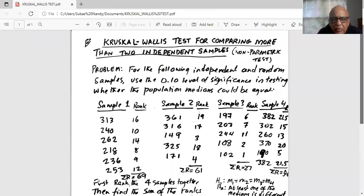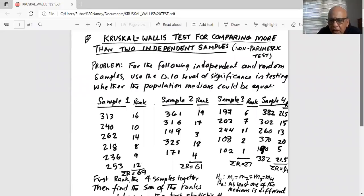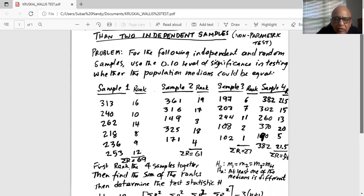So Kruskal-Wallis test for comparing more than two independent samples. Problem. And remember, it's a non-parametric test where we do not assume that the samples came from a population which are normal. For the following independent and random samples, use the 0.1 level of significance in testing whether the population medians could be equal. So we have data for sample one, sample two, and sample three.